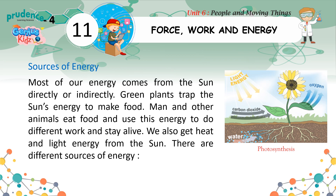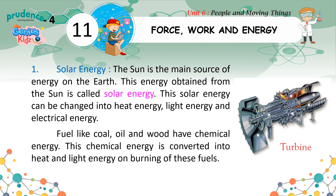Sources of Energy: Most of our energy comes from the sun, directly or indirectly. Green plants trap the sun's energy to make food. Man and other animals eat food and use this energy to do different work and stay alive. We also get heat and light energy from the sun. Solar energy: The sun is the main source of energy on the earth. This energy obtained from the sun is called solar energy. Solar energy can be changed into heat energy, light energy and electrical energy. Fuels like coal, oil and wood have chemical energy, which is converted into heat and light energy on burning.